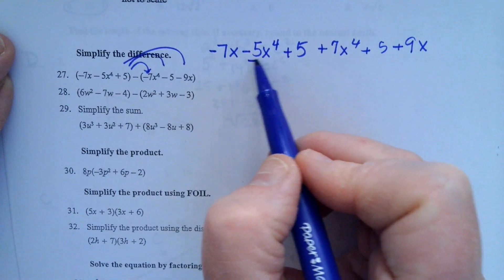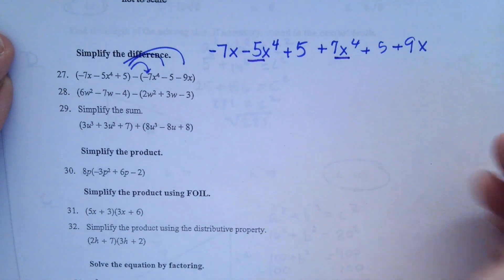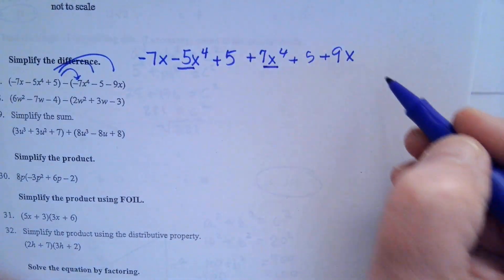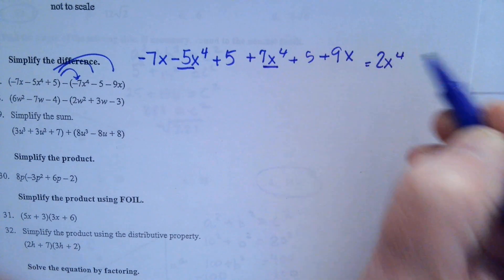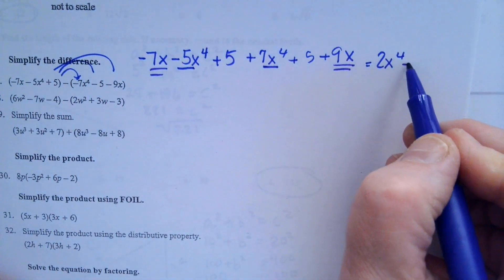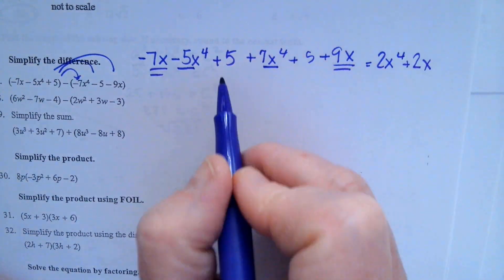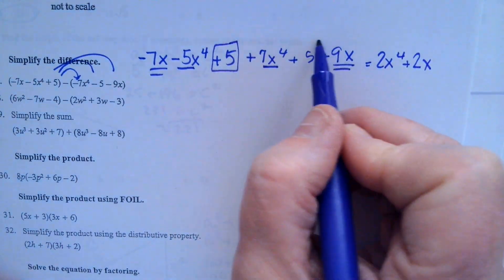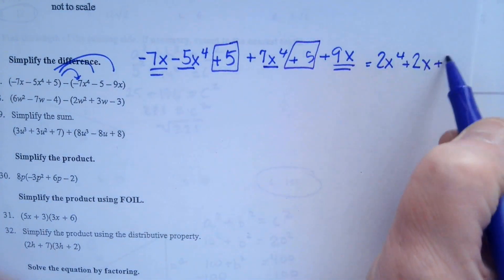So like terms, we're going to start right here. And that's going to give me 2x to the 4th. The regular x terms, 2x. And then the regular terms are right here. 5 and 5 make 10.